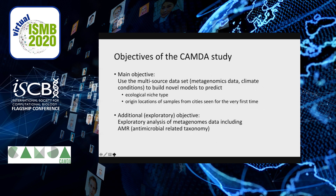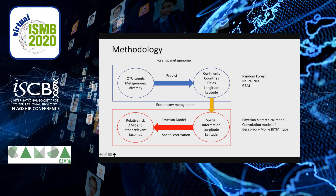The objectives of our study can be split into two sections. The main objective is to use this multi-source dataset and build novel models in order to predict biodiversity — the ecological niche type and the origin of locations of samples from cities seen for the very first time. We also set up an additional objective: exploratory analysis of metagenome data, including AMR and antimicrobial-related taxonomy.